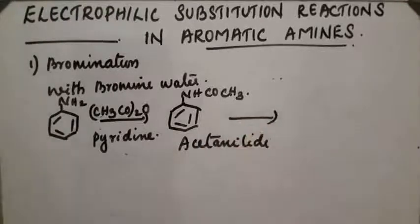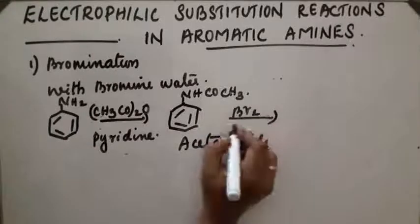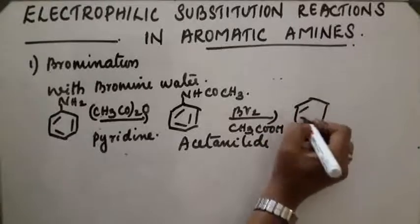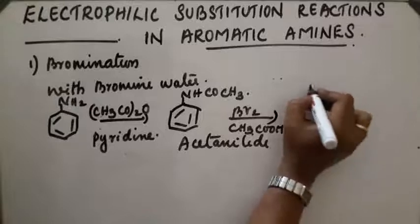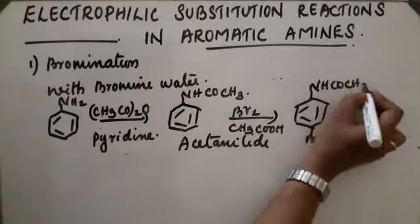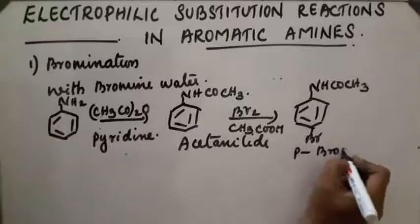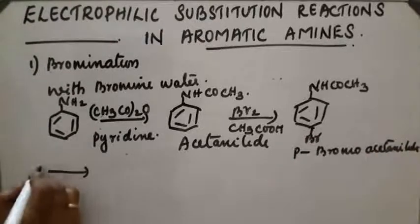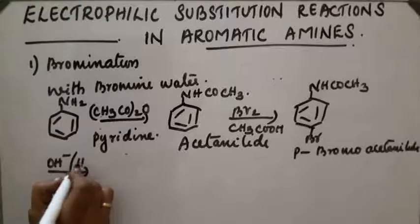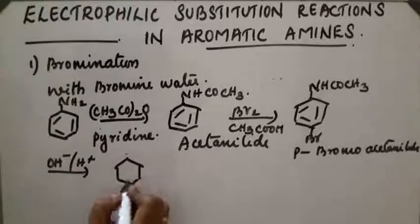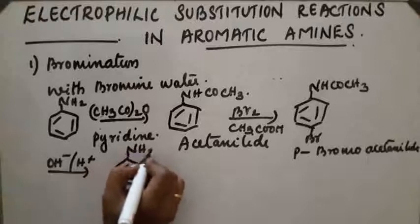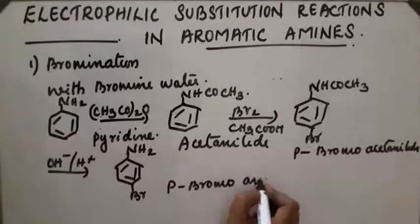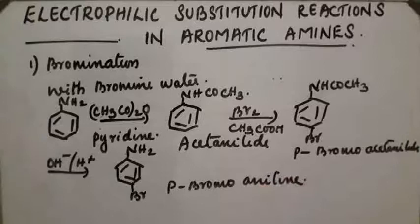Next, bromination takes place in the presence of acetic acid, and the major product will be para-bromoacetanilide. On hydrolysis, the NH2 group is regenerated and para-bromoaniline is obtained. This way, we can obtain a mono-substituted aniline derivative.